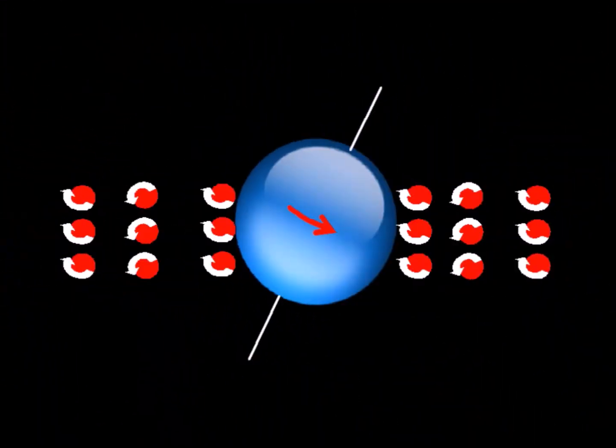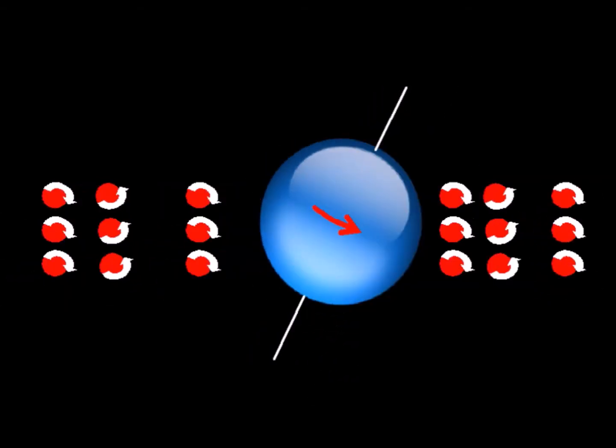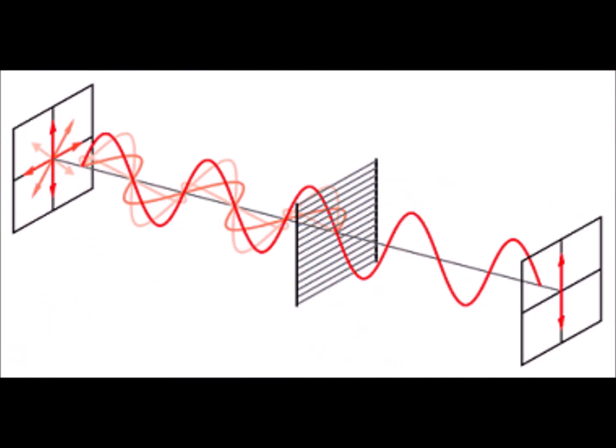When electrons oscillate, they transmit not only their momentum to the particles of ether, but also their angular momentum. Angular momentum can only be transmitted transversely. Each wavetrain is therefore polarized in the orientation of the angular momentum of the emitting electrons.